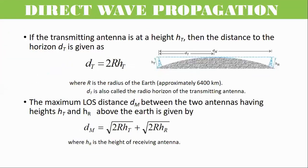Distance to the horizon is equal to 2 multiply radius of Earth multiply height of transmitting antenna. The maximum line-of-sight distance between the two antennas having heights ht and hr above the Earth is given by the following formula.